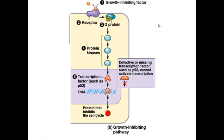Here is what P53 does: a growth-inhibiting factor comes in, its receptor protein goes to the G protein, and the G protein goes through a signal transduction pathway which sends transcription factors into the nucleus. At the nucleus, it copies the DNA.